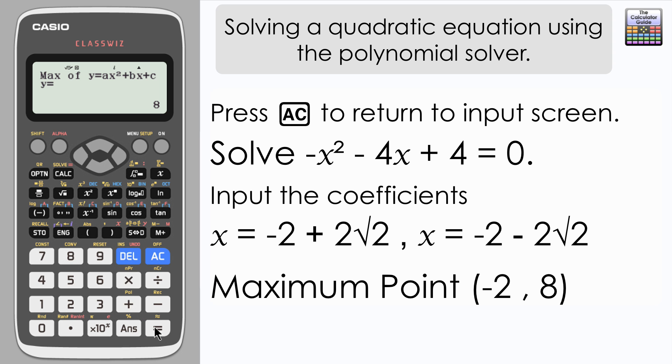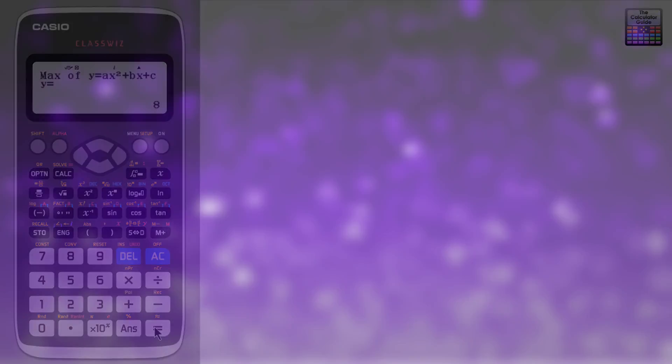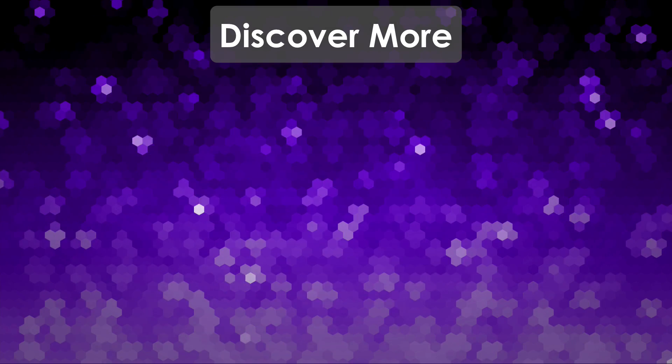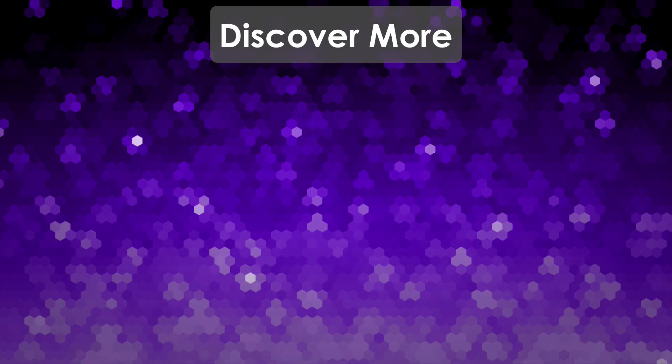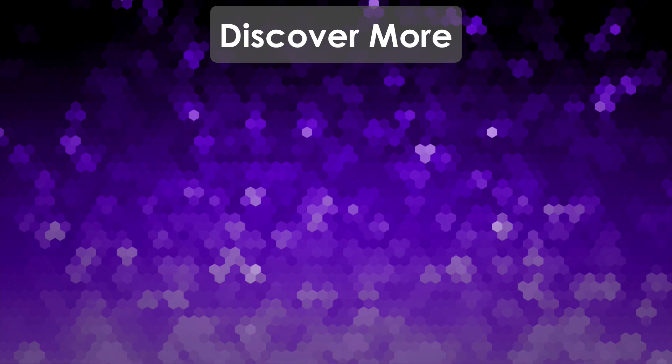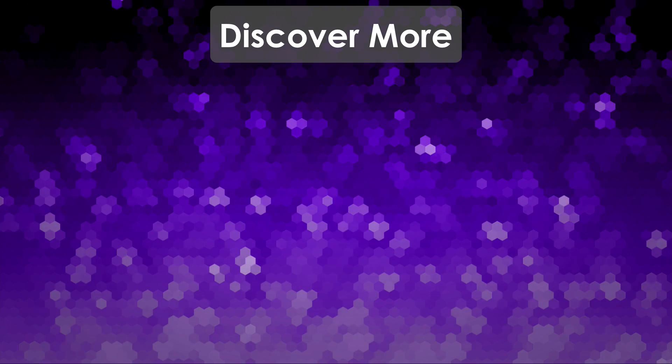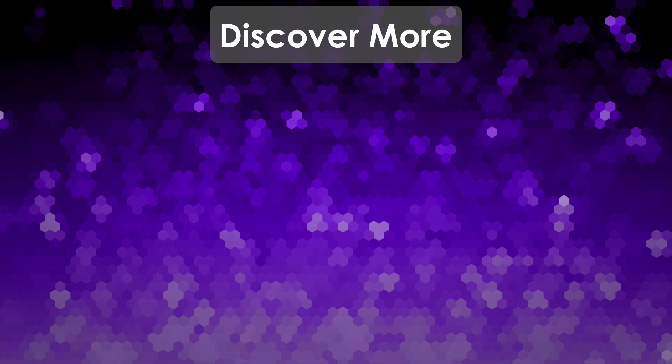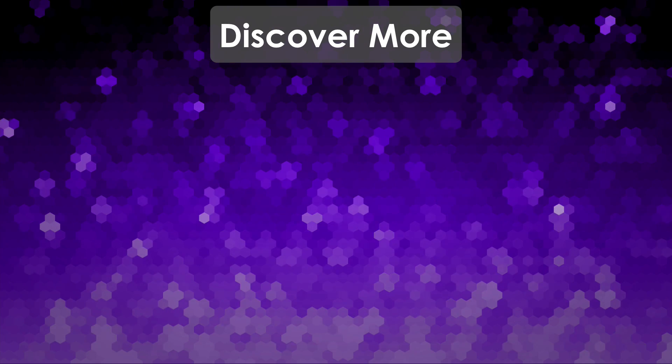So there we go, how to use the polynomial solver on the Casio ClassWiz in order to solve a quadratic equation, but also to find the minimum or maximum point, essentially the turning point of the quadratic graph. But that's it for this video. Thank you very much for watching. I'll see you next time on the calculator guide.